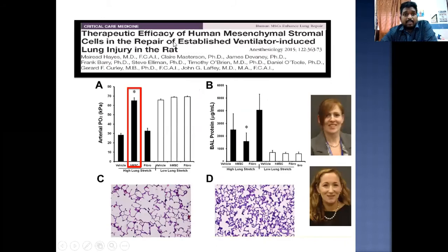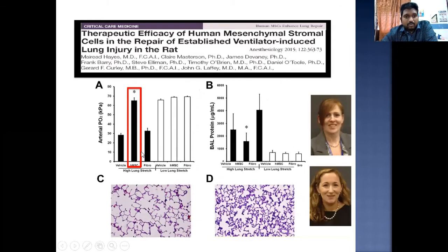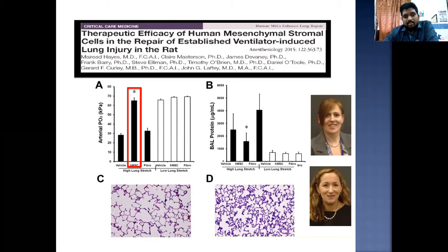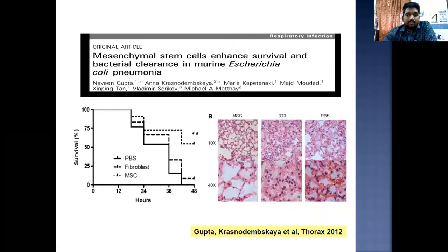An important paper analyzed the therapeutic efficacy of human mesenchymal stromal cells in repair of established ventilator-induced lung injury in rats, published in Anesthesiology in 2015 by Meredith Hayes et al. They created artificially induced lung injury in rats using high and low lung stretch and analyzed arterial PaO2/FiO2 levels and BAL protein levels. Rats that received mesenchymal stem cell therapy showed improved arterial PaO2/FiO2 and reduced BAL protein levels, indicating less inflammatory fluid — evidence that MSC therapy can halt progression of ARDS.